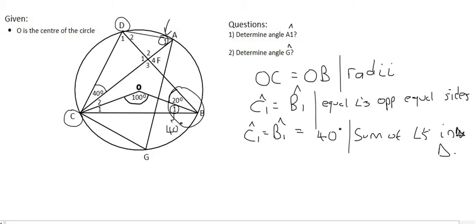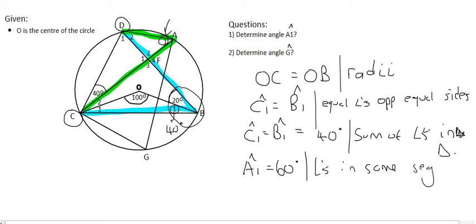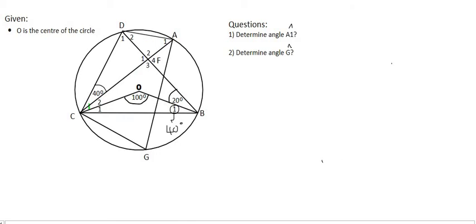And so we were busy trying to find A1, and we can say that A1 is going to be equal to 60 degrees, because remember we said that A1 comes from D and C, and so does B. It also comes from D and C. And so there was a video we watched a while back that had to do with angles in the same segment, and that's the reason for this one. We typically don't write out the whole word segment, we just say in same seg. So we've done question 1.